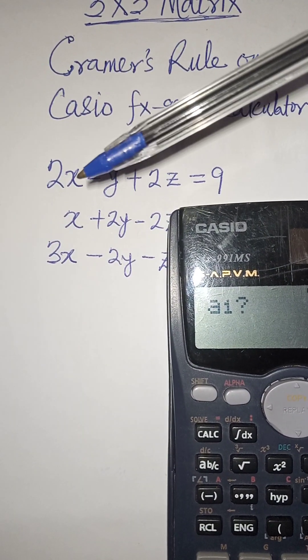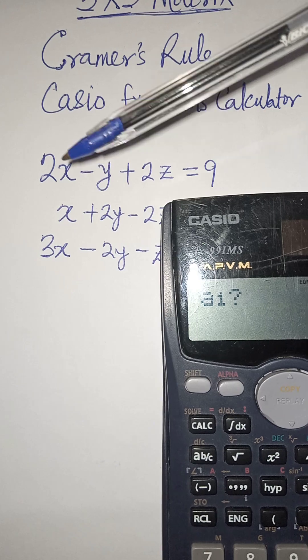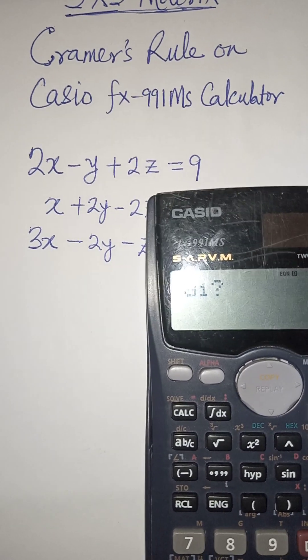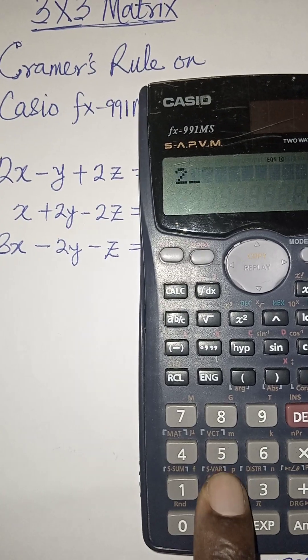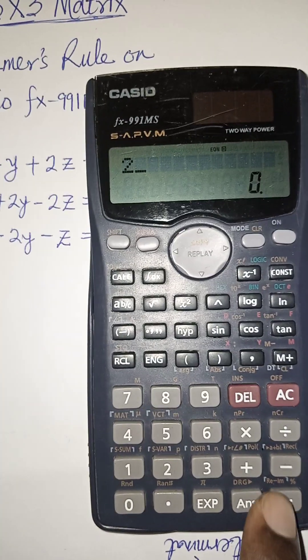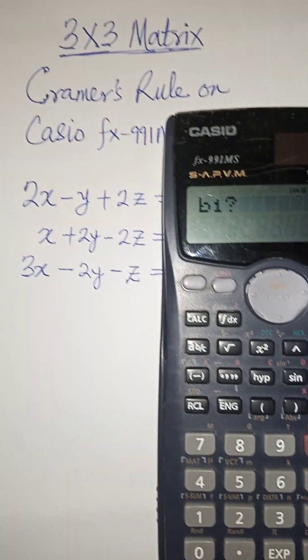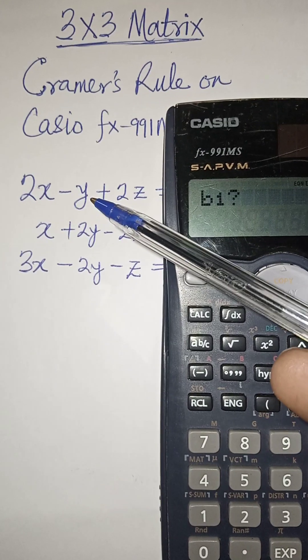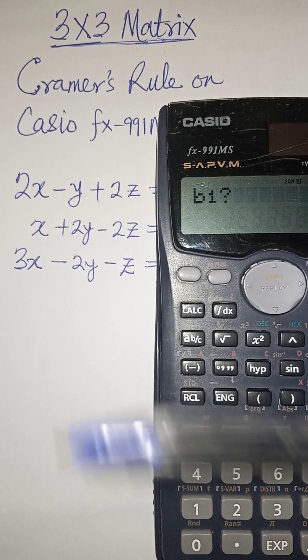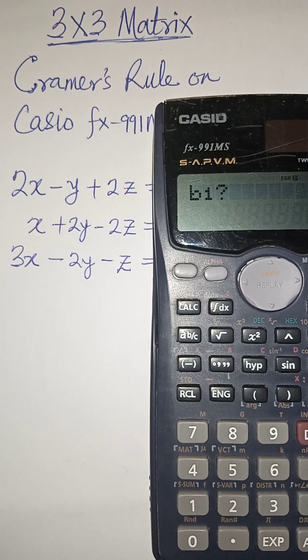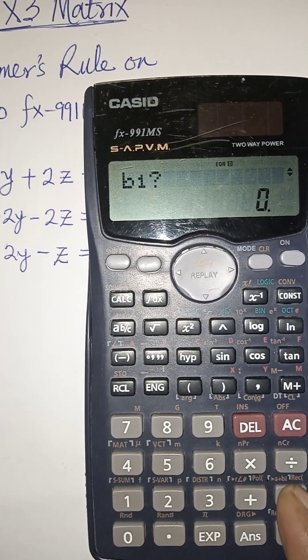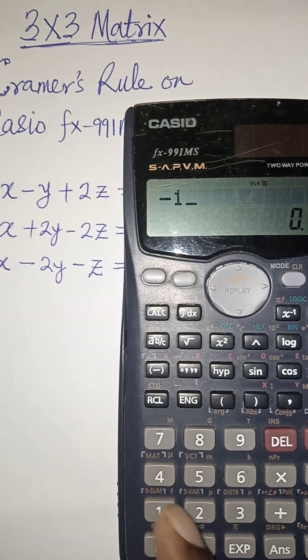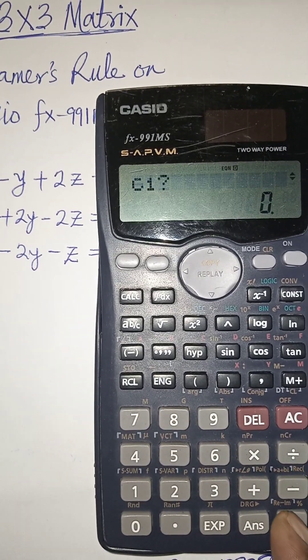A1 is talking about the coefficient of this x, which is 2. So press 2 and then press equal to. It will bring B1 which is the coefficient of y, and that is -1. If you omit that minus, it will give you wrong value.